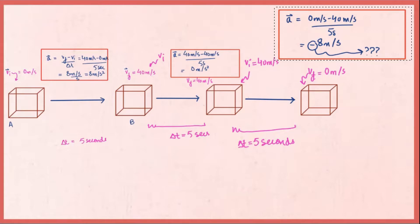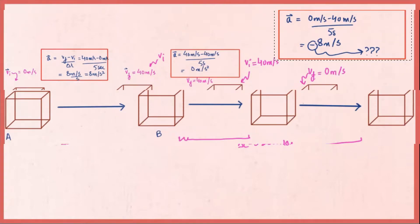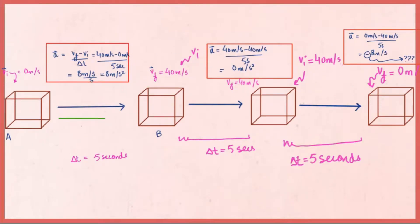Why minus 8? Because acceleration is a vector quantity. If the velocity increases, then acceleration is in the direction of velocity. Conversely, if the velocity decreases, then the acceleration is opposite to the velocity. With this analogy, you will better understand angular acceleration.